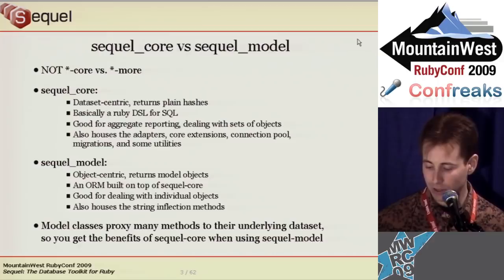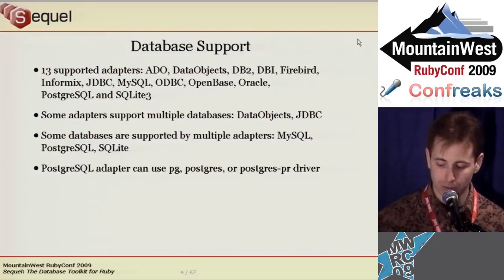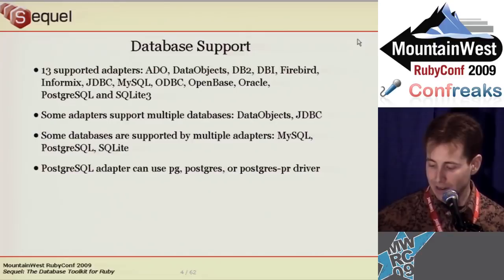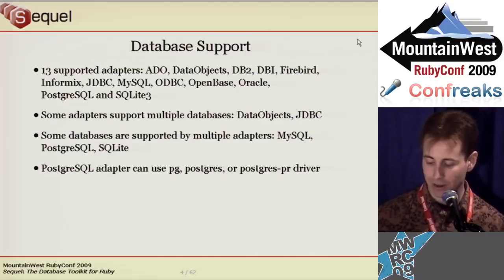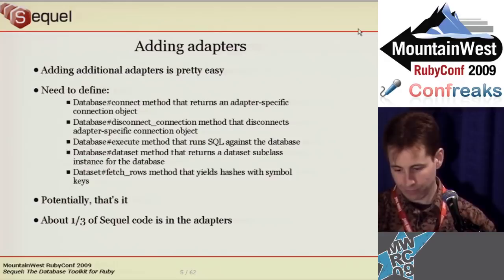Sequel currently supports 13 database adapters. Some databases are supported by multiple adapters, and some adapters support multiple databases, though the best supported are the native ones. I test MySQL, PostgreSQL, and SQLite using the native, JDBC, and Data Objects adapters, all of which have good support. I know Sequel users who are using the ADO, Firebird, OWC, and Oracle adapters successfully, and I haven't received bug reports about the others.